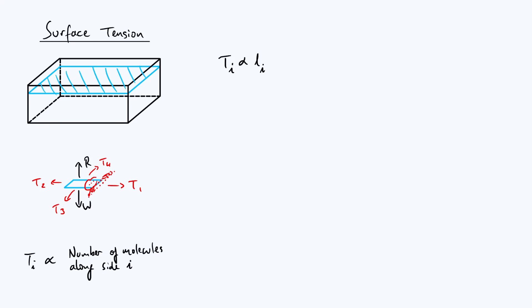We can drop the subscripts because by symmetry we can make the same argument in any arbitrary direction, not just directions 1, 2, 3, and 4. We introduce a constant of proportionality and say T equals gamma times L, where gamma is the tension divided by the length. Gamma is in fact the surface tension—it's defined as the tension force per unit length within the surface. So you could measure it for example in newtons per meter.